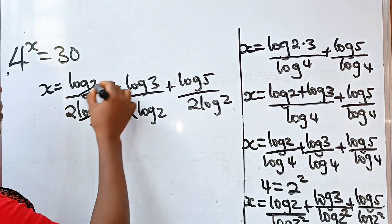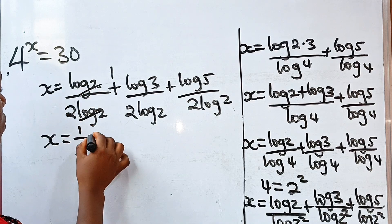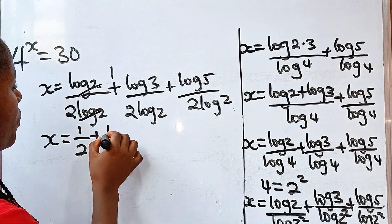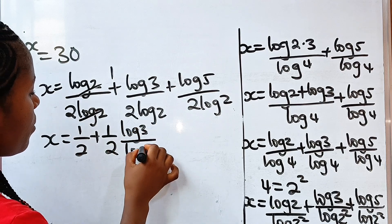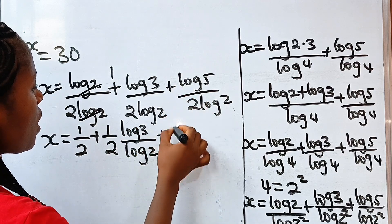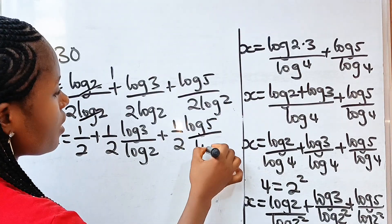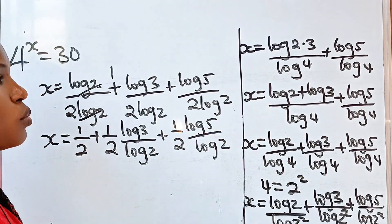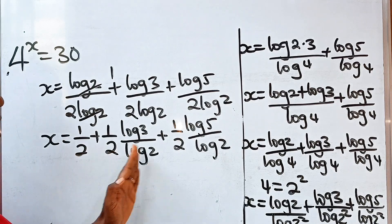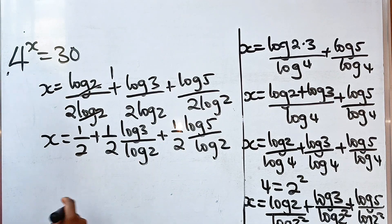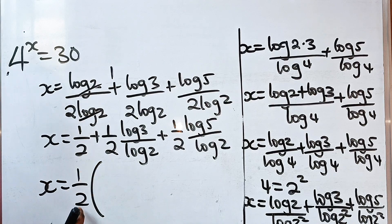Now log2 cancels with log2, giving 1/2. So x equals 1/2 plus log3/(2·log2) plus log5/(2·log2). We can factor out one-half from all terms.